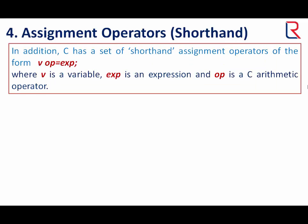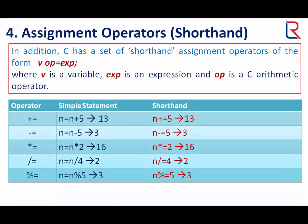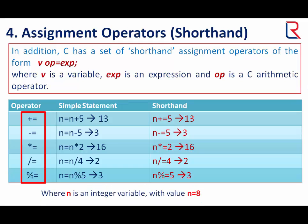In addition, C has a set of shorthand assignment operators of the form V OP= EXP semicolon, where V is a variable, EXP is an expression, and OP is a C arithmetic operator. The shorthand assignment operators are: plus-equal, minus-equal, asterisk-equal, slash-equal, and modulo-equal. You can see the difference between a simple statement and a shorthand statement, where n is an integer variable with value 8.